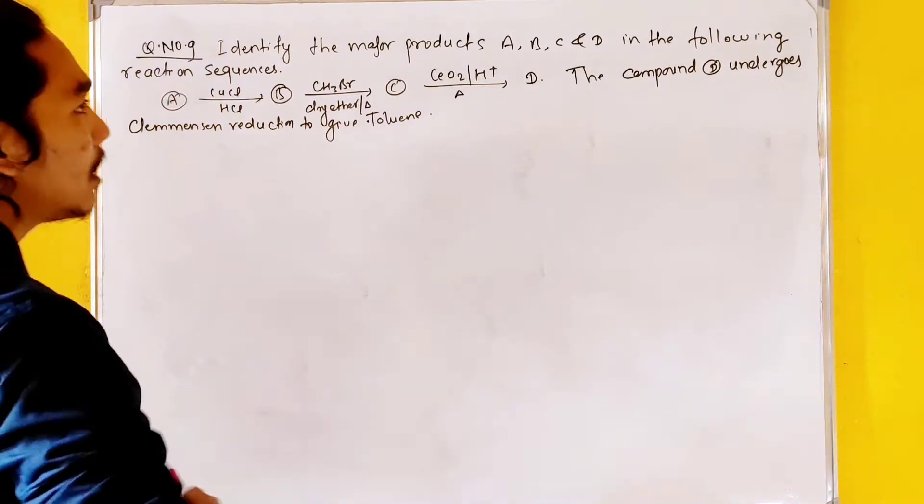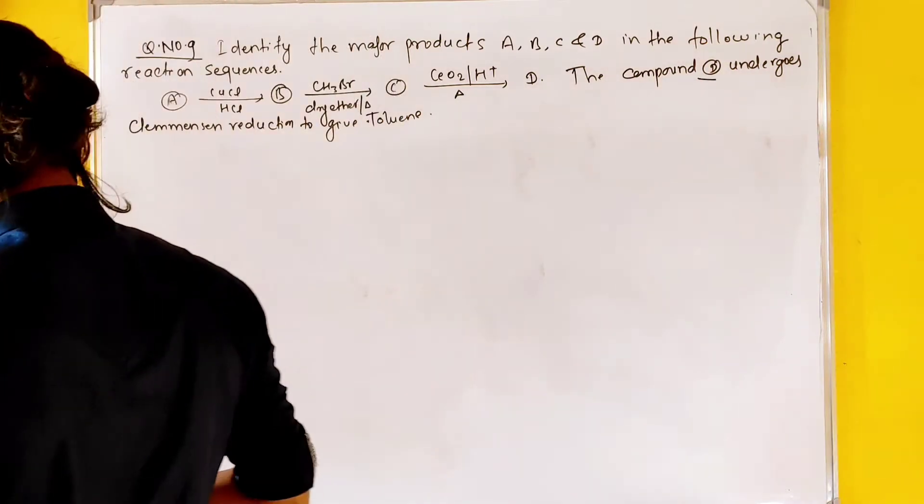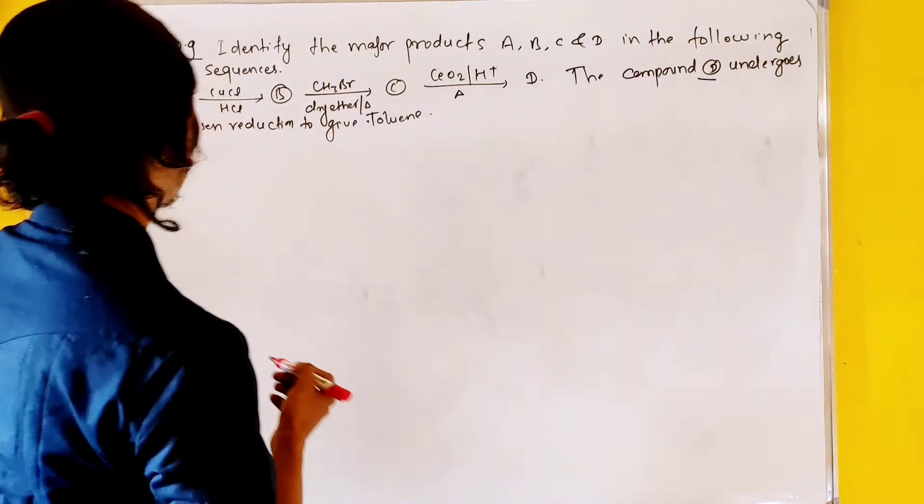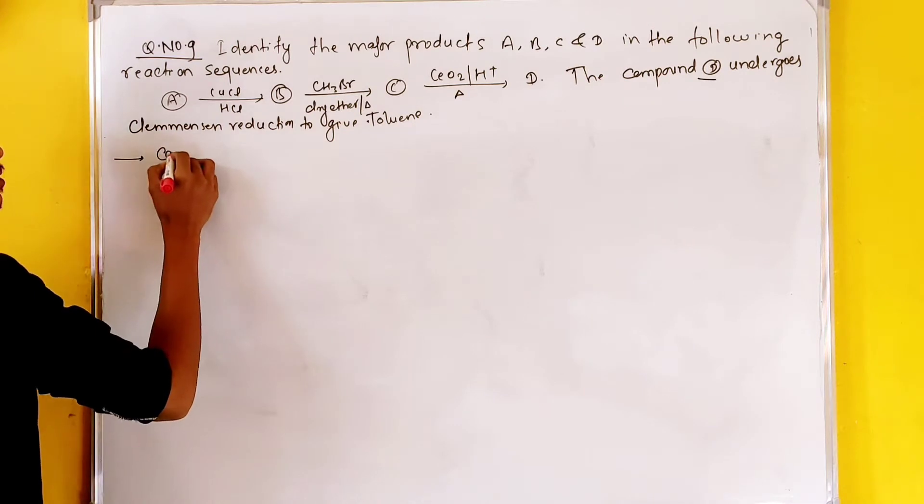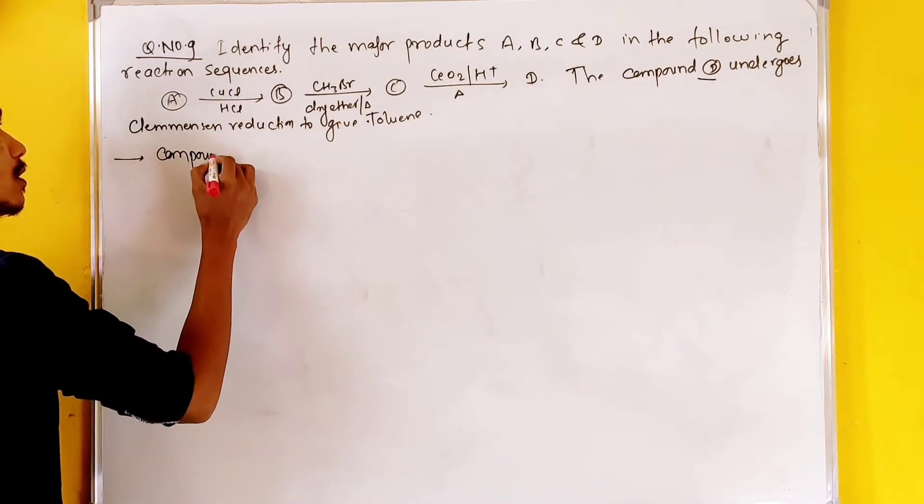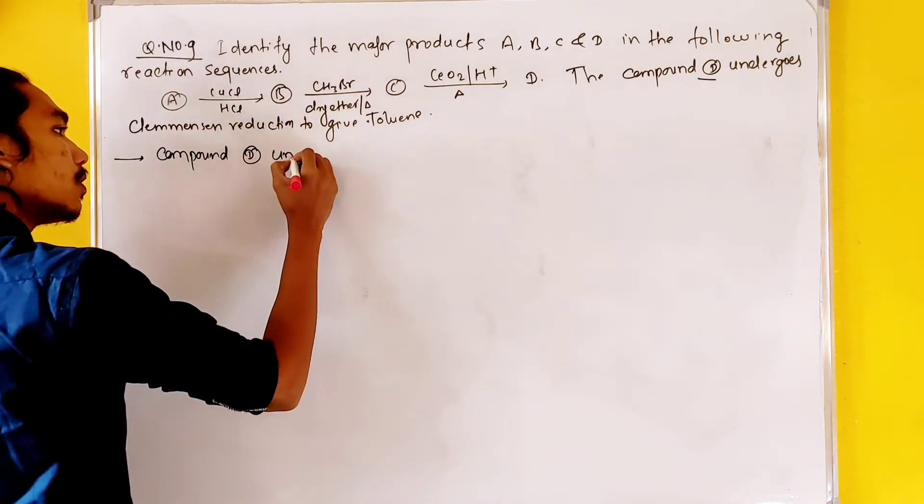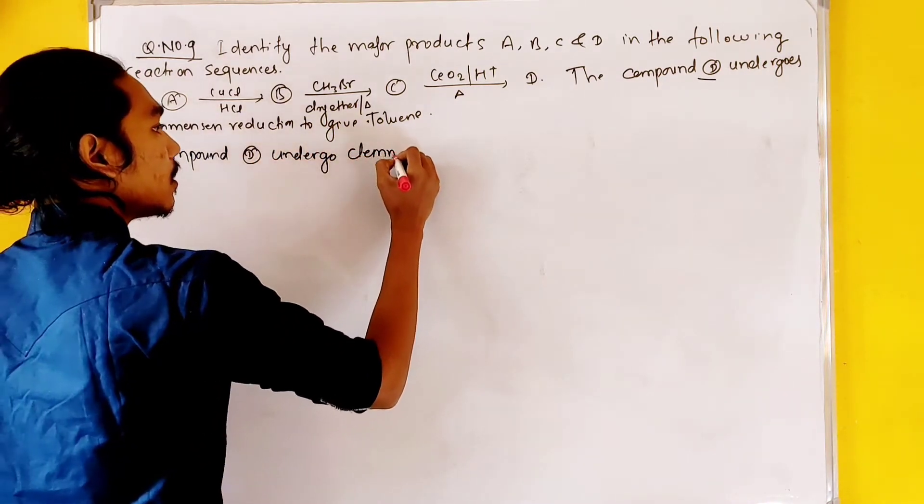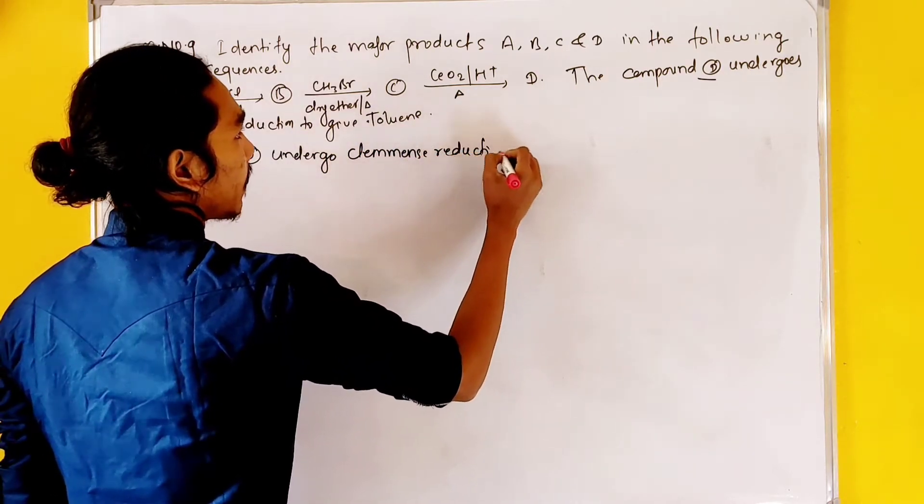We will have a clear compound D. The compound D undergoes Clemenson reduction. That means compound D undergoes Clemenson reduction.